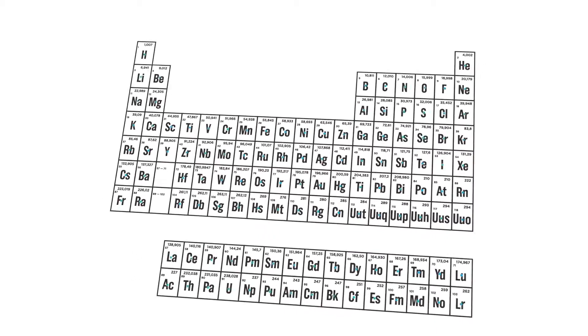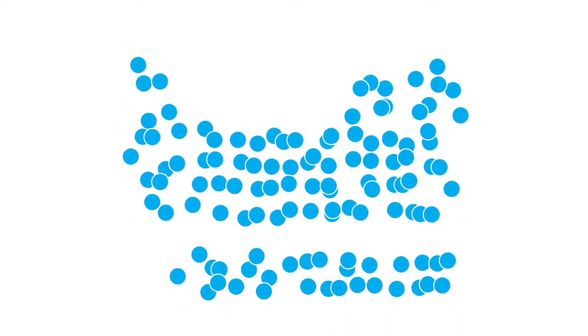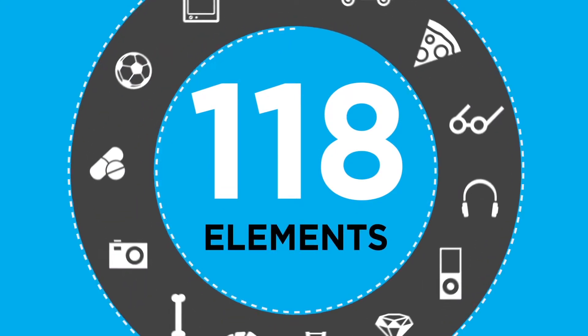The periodic table is a chart that represents all 118 chemical elements that constitute the known universe. Everything around us is made up of at least one of these elements.